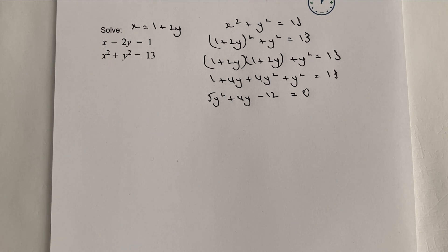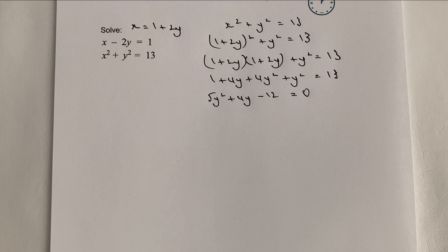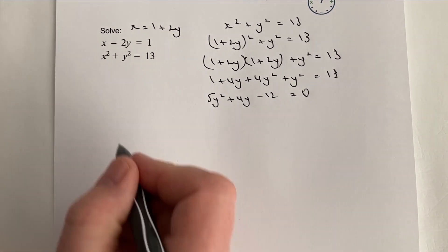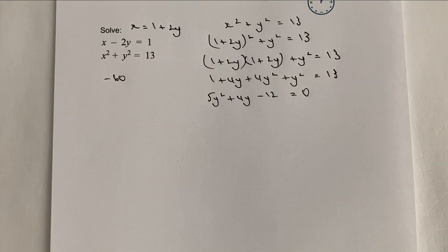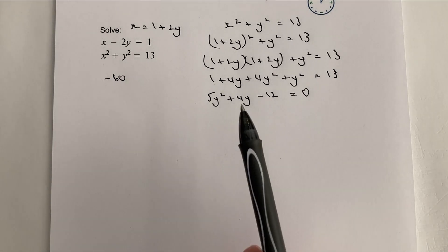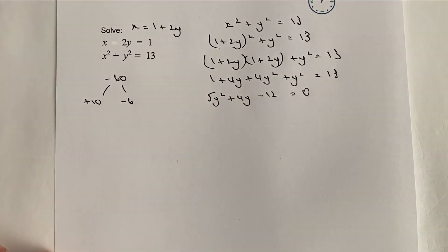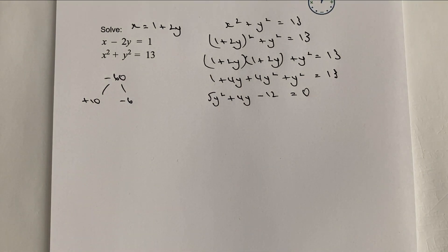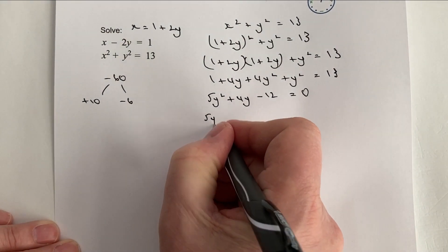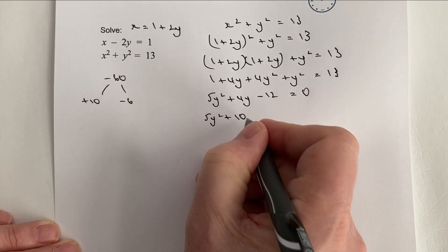On the surface that doesn't look particularly easy to factorize. I'm going to show you the method I use for these sorts of things: 5 × (−12) = −60, and I want two numbers that multiply to make −60 and add to make +4. I'm going to choose +10 and −6, since those multiply to −60 and add to +4.